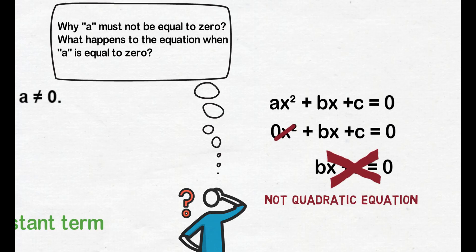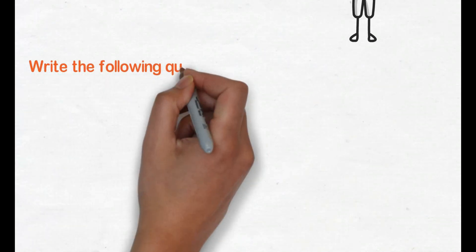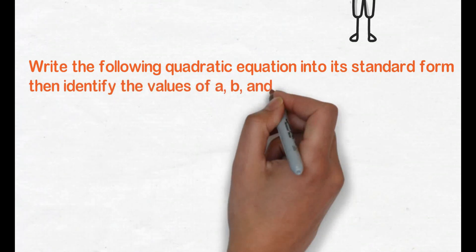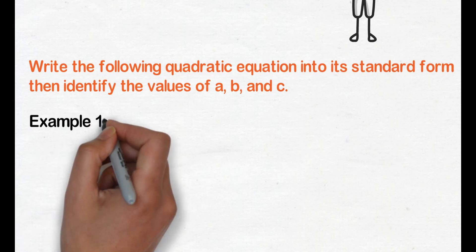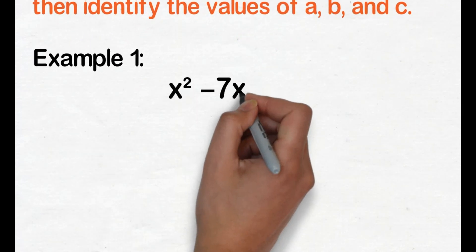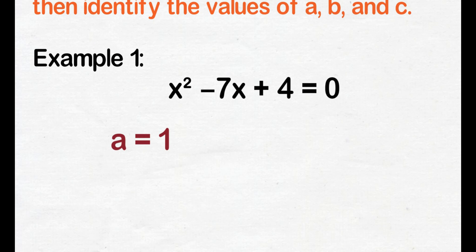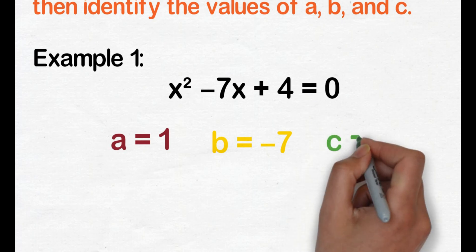Let's have an example. Write the following quadratic equations in standard form, then identify the values of a, b, and c. Example number 1: x squared minus 7x plus 4 equals 0. It is a quadratic equation and is already in its standard form. The value of a here is 1 — when you don't see a numerical coefficient on a term with a variable, the value is automatically 1. The value of b is negative 7 and c is 4.